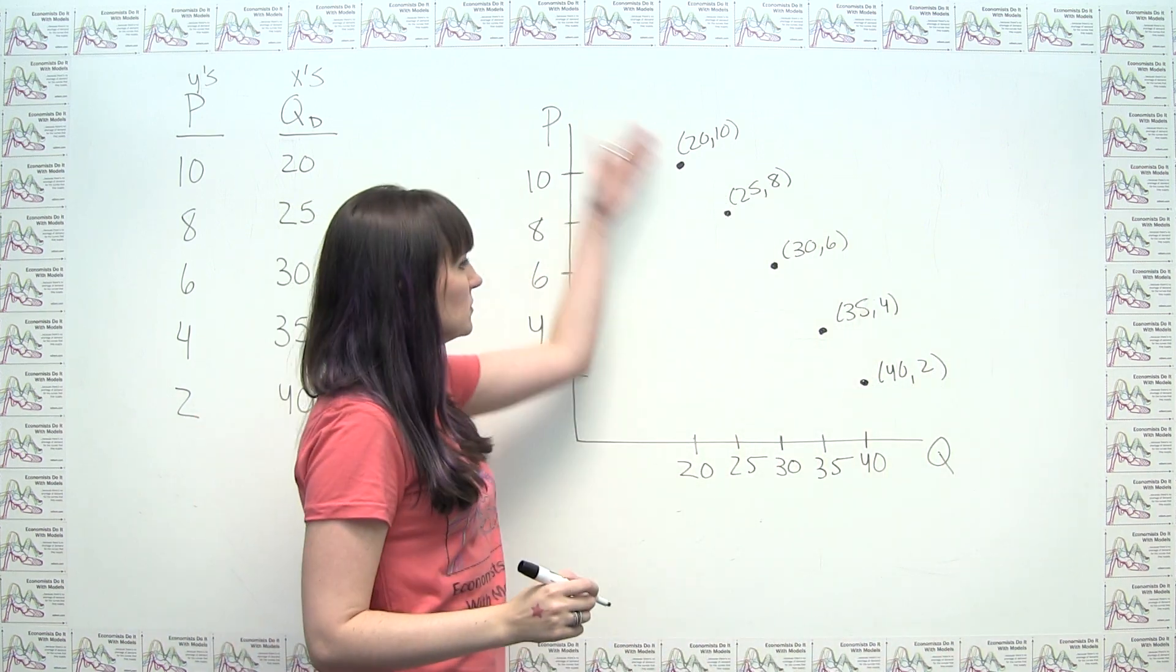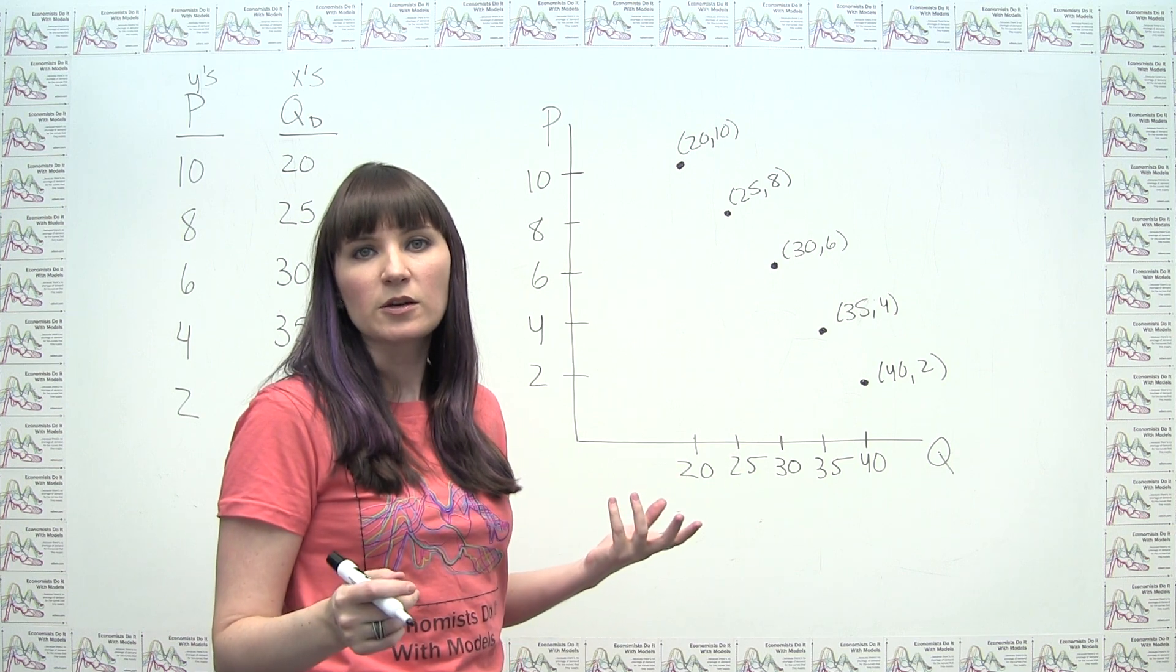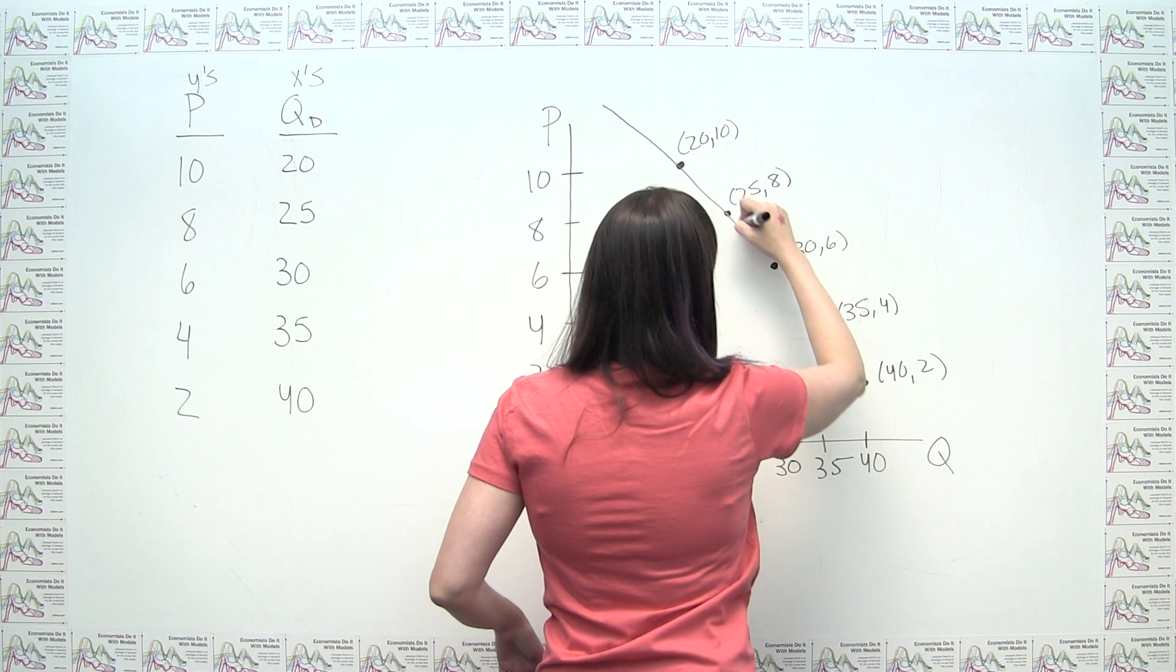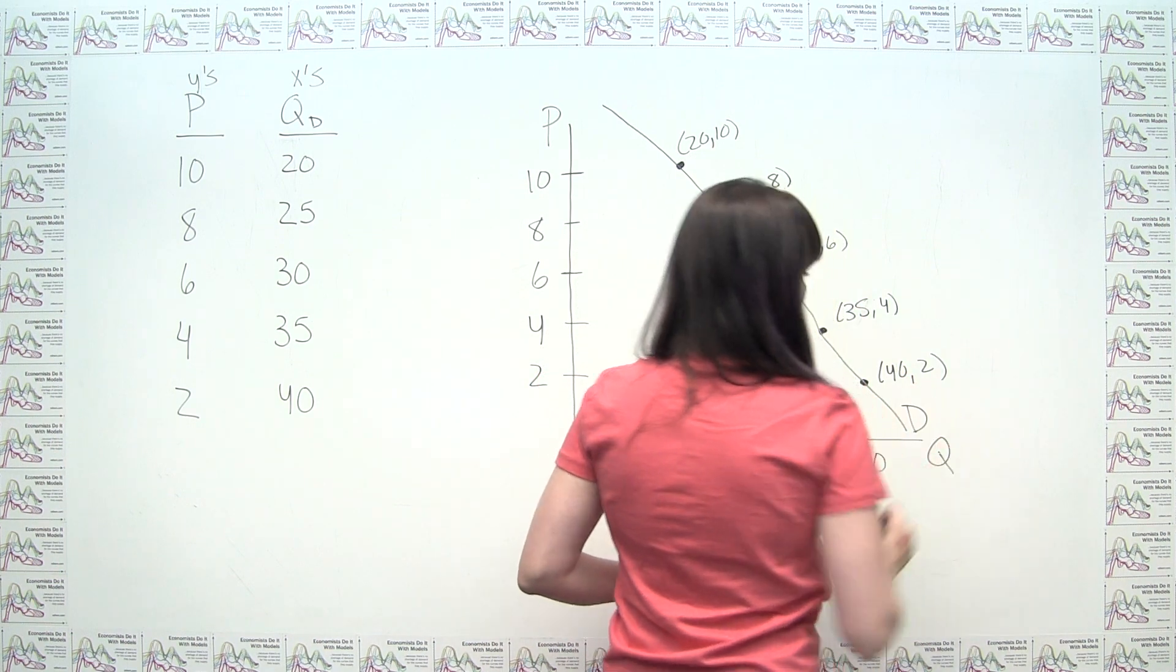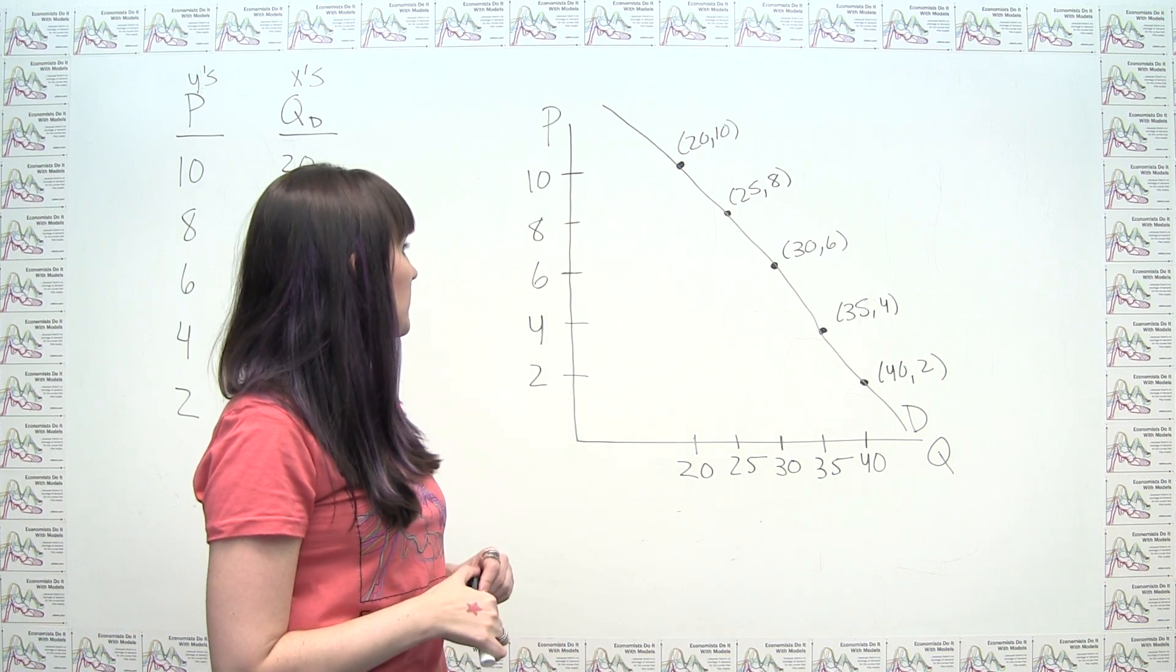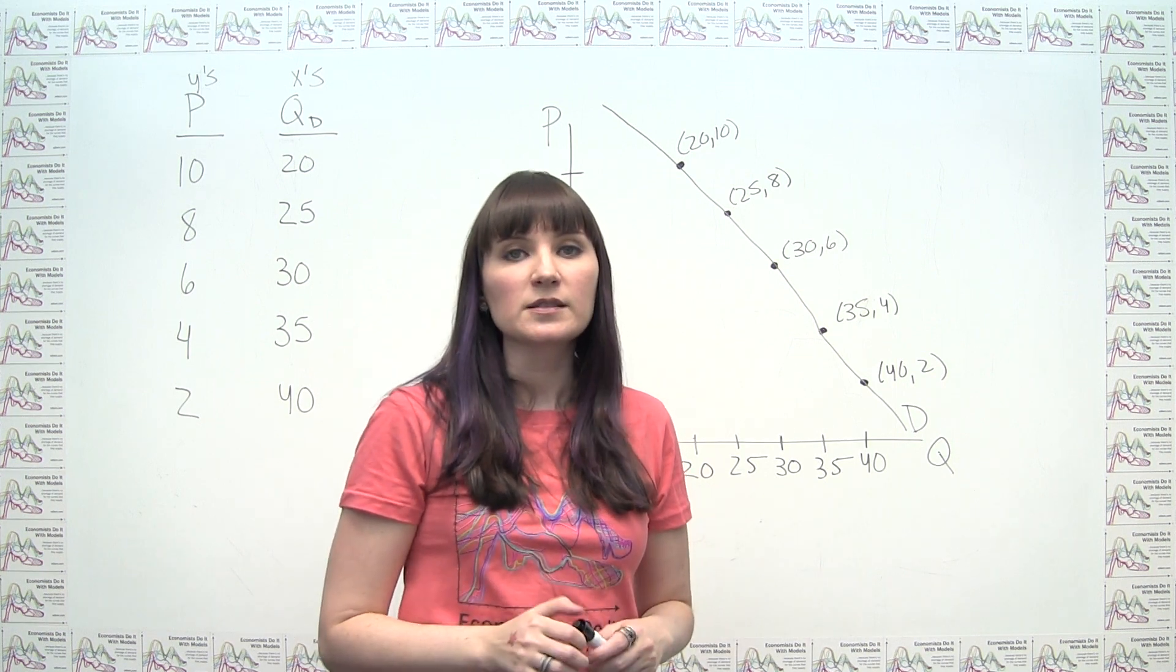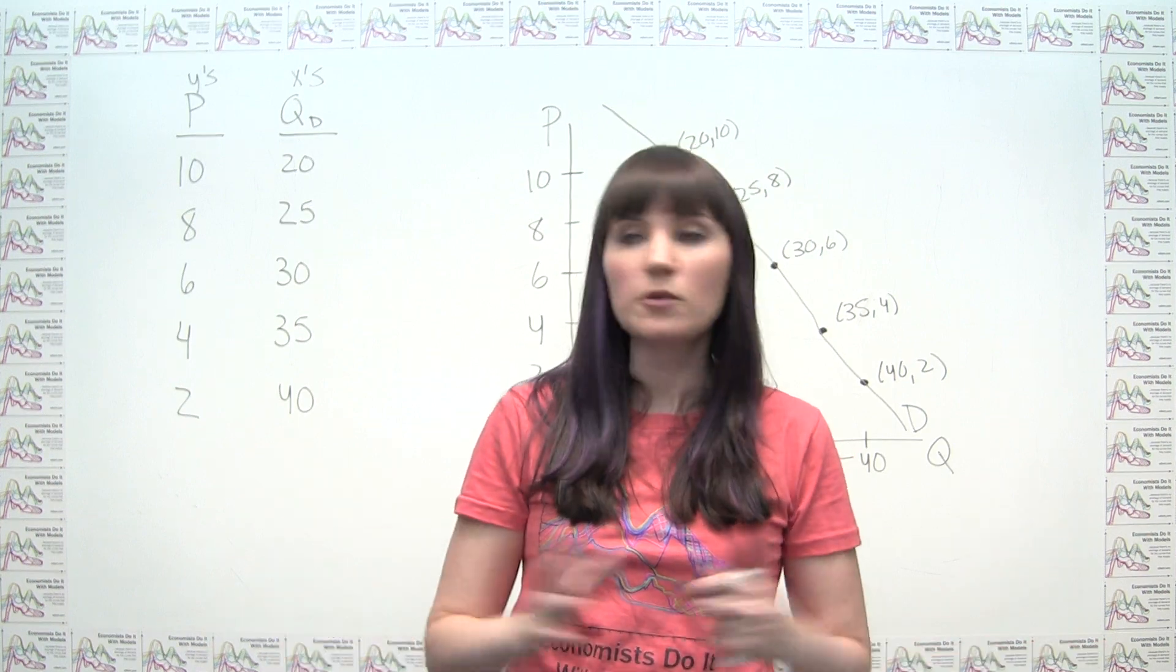And then all we would have to do is connect our dots to try to figure out what the rest of our demand curve would look like. And we could say, all right, we're just going to connect the dots like so and call this D for demand. Now, in this particular instance, I wasn't perfect about drawing it that way. But in this particular instance, we knew that this demand curve was going to be a straight line. How did I know that?